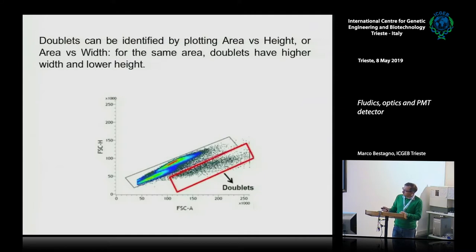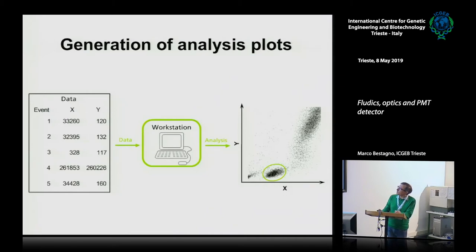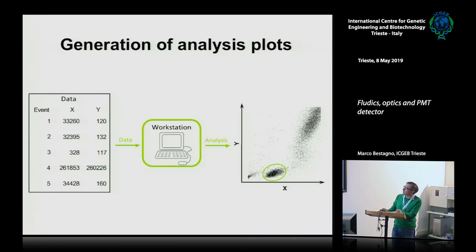The next point is how these plots are generated. For each event, a cell crosses the laser beam and gives pulses; for each parameter — scatter, fluorescence — the system collects the values and they are stored by the workstation. The software collects all this data and plots them, so each point in the plot is a cell identified by its coordinates for the parameters analyzed. Two parameters are plotted in a bidimensional dot plot.